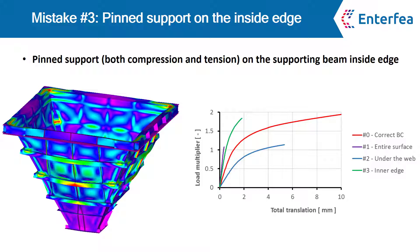Look at the chart on the right. The correct solution with contact is in red and the solution with mistake number three is green. You can see that actually there is a quite significant difference there.